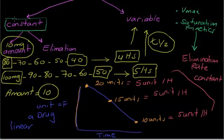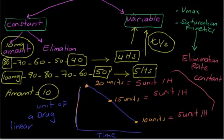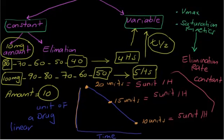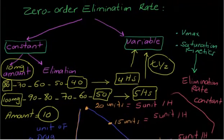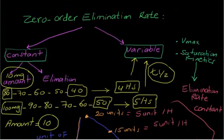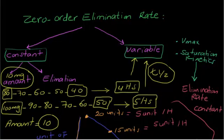Rapid review: in zero order kinetics you have two constant things — the amount of the drug being eliminated is constant, and the elimination rate is constant (for example, 5 units per hour, regardless of dose changes). The only thing that changes is the T half-life, which is not fixed in zero order kinetics but is variable.